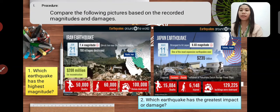7.4 magnitude struck Iran near the Caspian coastline. 700 villages destroyed. 200 million dollars for reconstruction. 2,000 deaths. 60,000 injured. 100,000 homes destroyed.